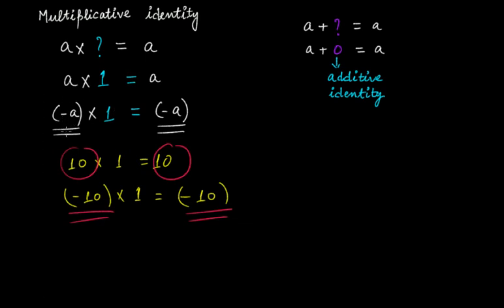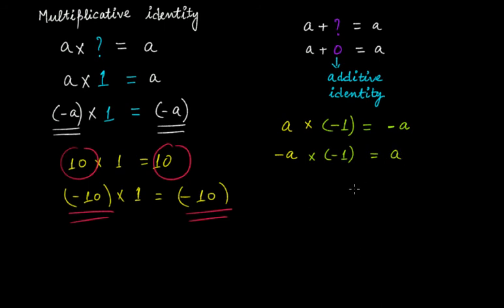One very interesting point arises here: what if we multiply with minus one? Whether it is 'a' or minus 'a', will multiplying by minus one give the same result, making minus one also a multiplicative identity? No — because if you multiply 'a' with minus one you'll get minus a, and if you multiply minus a with minus one you'll get a. Since you have 'a' and the outcome is minus a, these two values are not equal, so minus one is not the multiplicative identity.